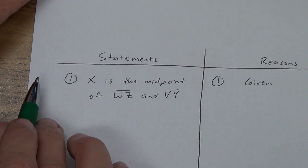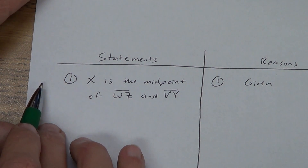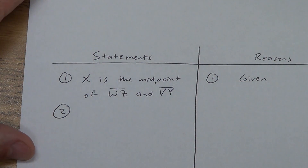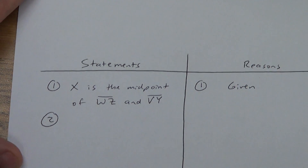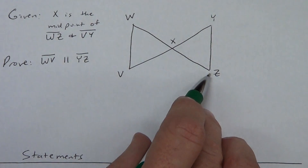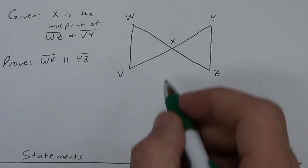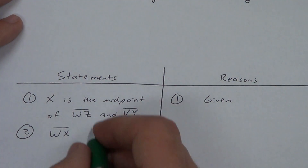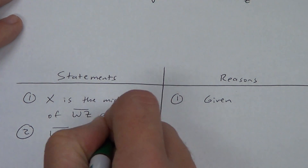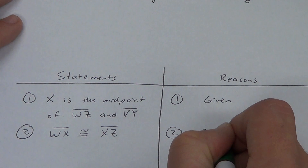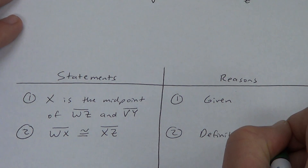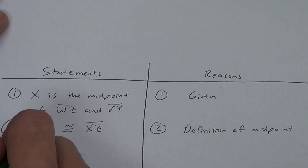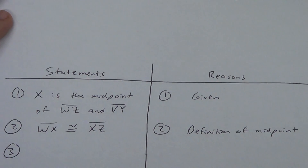X is the midpoint of WZ and VY — given. I can't write anything off to the side because I haven't said anything is congruent yet. What does midpoint mean? It means a point in the middle that makes two congruent pieces. So if X is the midpoint of WZ, then WX has to be congruent to XZ — definition of a midpoint. Since that was a side, I'm going to write S over here off to the side.